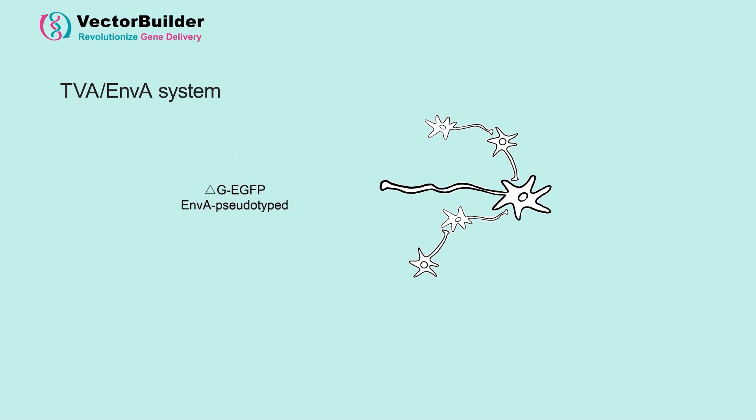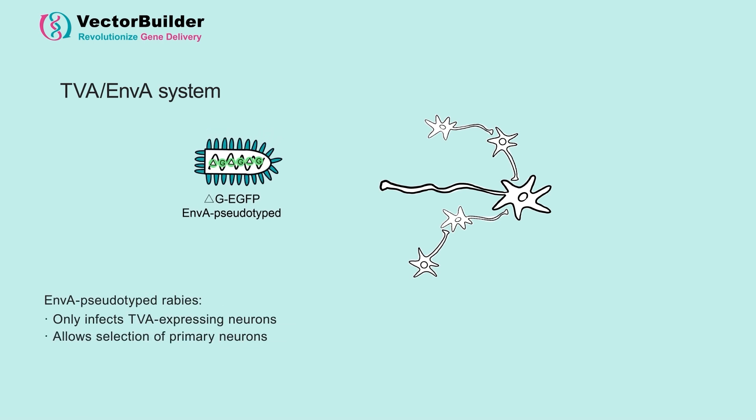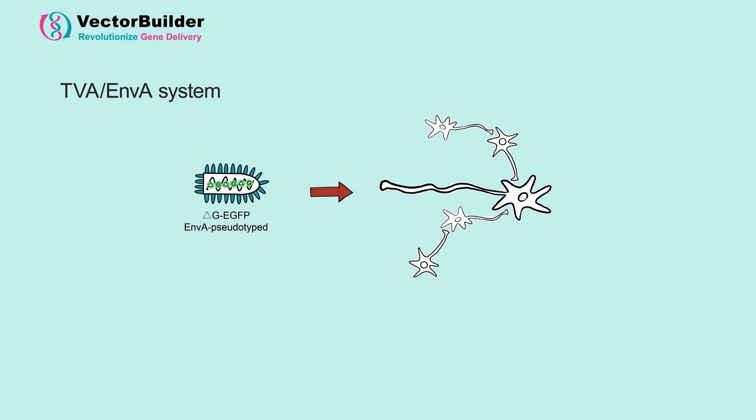By pseudotyping the rabies virus with ENVA, we can produce a virus that only infects cells expressing TVA. We can achieve the desired specificity and monosynaptic tracing by expressing TVA in the target primary neurons in addition to the G protein.